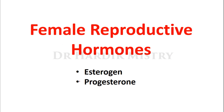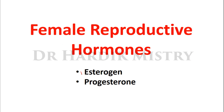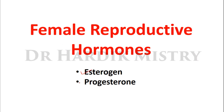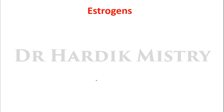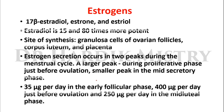Female reproductive hormones estrogen and progesterone — starting with estrogen: 17 beta-estradiol, estrone, and estriol. These are different chemical structures of estrogen. Estradiol is 15 to 80 times more potent than estrone and estriol.